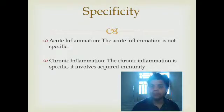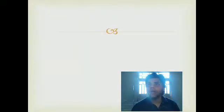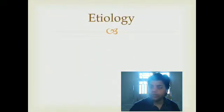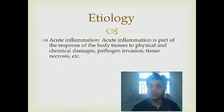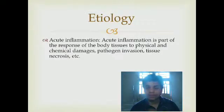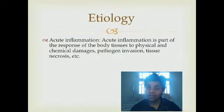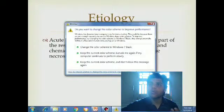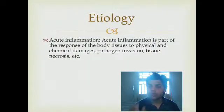Now let's talk about the etiology — the main causes — of acute and chronic inflammation. The main causes of acute inflammation are physical and chemical damages, which are usually caused by pathogen invasion, tissue necrosis, a splinter, or any foreign body or trauma. These are the main etiologies of acute inflammation.